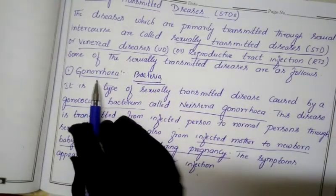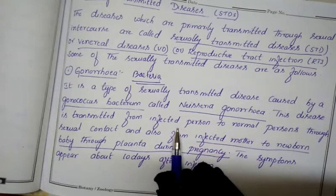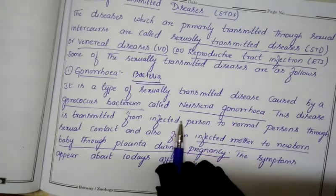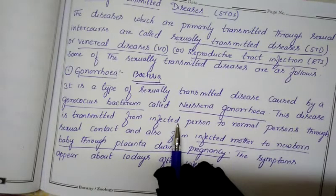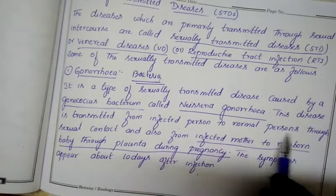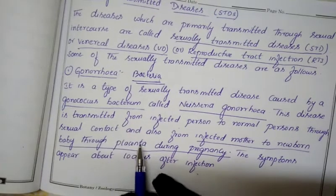Gonorrhea is transmitted through sexual contact. If one partner has the disease, it automatically transmits to the healthy partner through sexual contact, whether male or female.